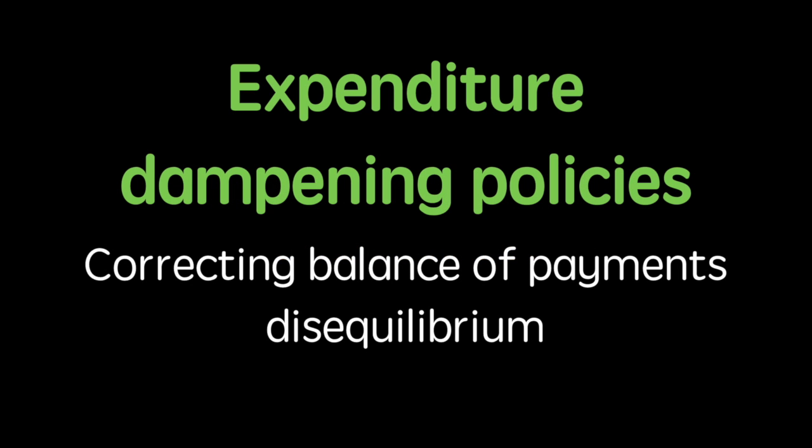In this video we'll cover policies used to correct disequilibrium in the balance of payments. In particular we'll look at expenditure dampening policies and how they can be used to reduce a current account deficit.